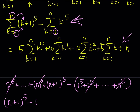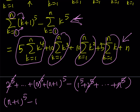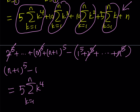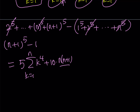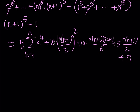On the right-hand side we can plug in the known formulas. The sum equals (n+1)^5 minus 1, which equals 5 times the sum of k^4, plus 10 times [n(n+1)/2]², plus 10 times n(n+1)(2n+1)/6, plus 5 times n(n+1)/2, plus n. I'll isolate the sum of fourth powers by moving everything else to the other side.